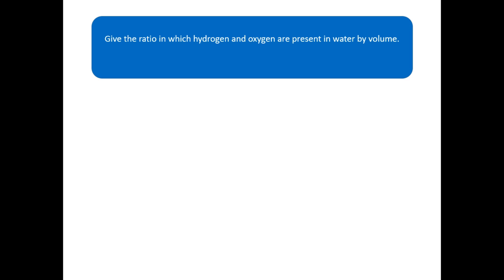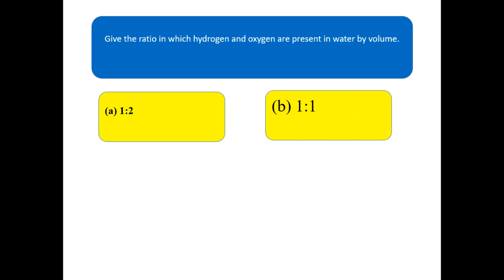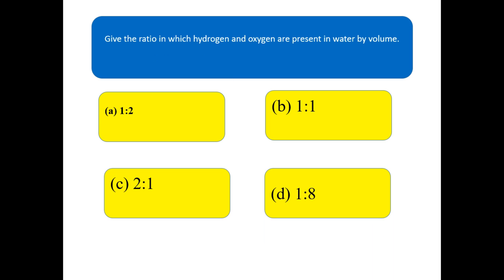Next question: give the ratio in which hydrogen and oxygen are present in water by volume. Your options are 1:2, 2:1, 1:1, or other. Remember, this is asking about volume — write the correct answer clearly.